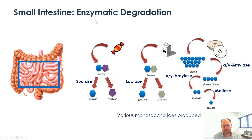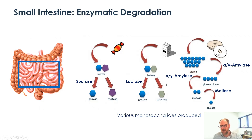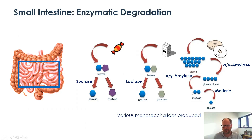Catabolism picks up again when polysaccharides transition into the small intestine, where a variety of different enzymes break down disaccharides. Sucrase breaks down sucrose into glucose and fructose. Lactase breaks down lactose from milk into galactose and glucose. Amylase breaks down amylose or amylopectin into maltose and glucose molecules. Maltase itself breaks down disaccharides of glucose into glucose monomers.